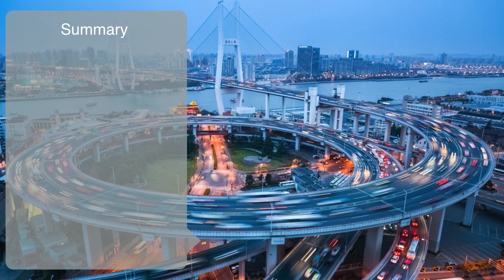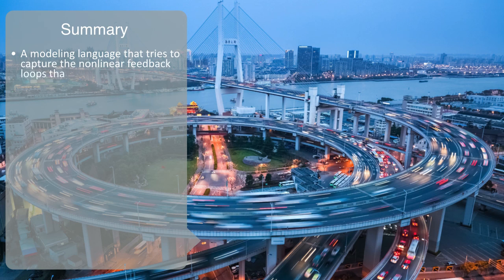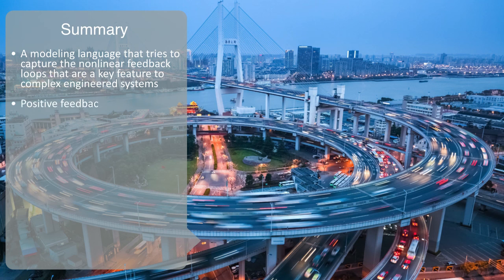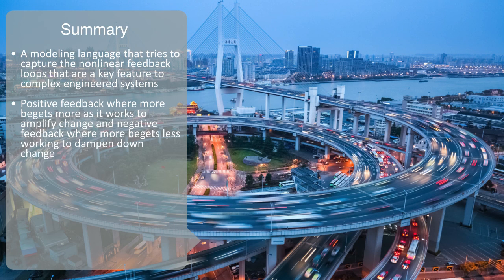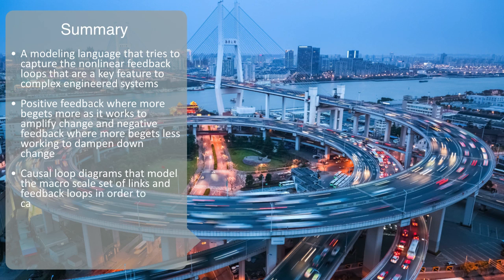To wrap up then, we've been talking about, system dynamics, as a modeling language, that tries to capture, the non-linear feedback loops, that are key features, to complex engineered systems. We've talked about, two different types. Positive feedback, where more begets more, as it works to amplify change. And negative feedback, where more begets less, working to dampen down change. We talked about, causal loop diagrams, which try to model, the macro scale set of links, and feedback loops, in order to capture, the key drivers, behind the systems functioning.